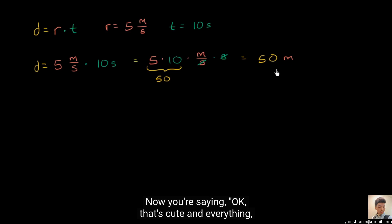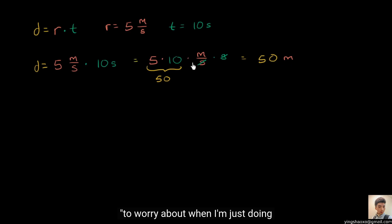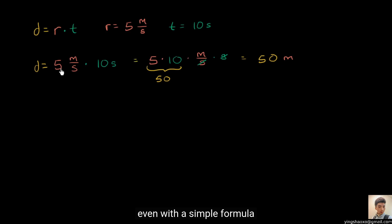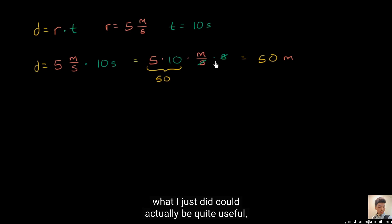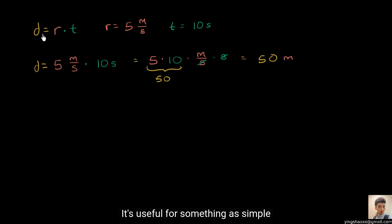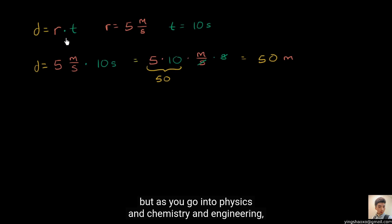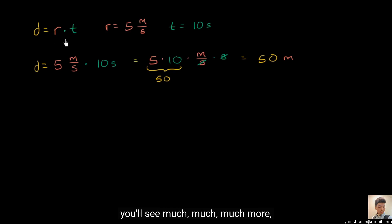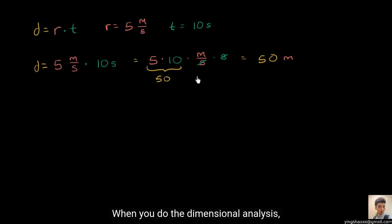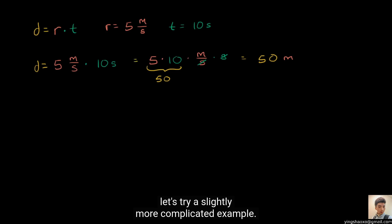Now you're saying, okay, that's good and everything, but this seems like a little bit of too much overhead to worry about when I'm just doing a simple formula like this. But what I want to show you is that even with a simple formula like distance is equal to rate times time, what I just did could actually be quite useful. And this thing that I'm doing is actually called dimensional analysis. It's useful for something as simple as distance equals rate times time, but as you go into physics and chemistry and engineering, you'll see much, much, much more hairy formulas. And when you do the dimensional analysis, it makes sure that the math is working out right — that you're getting the right units.